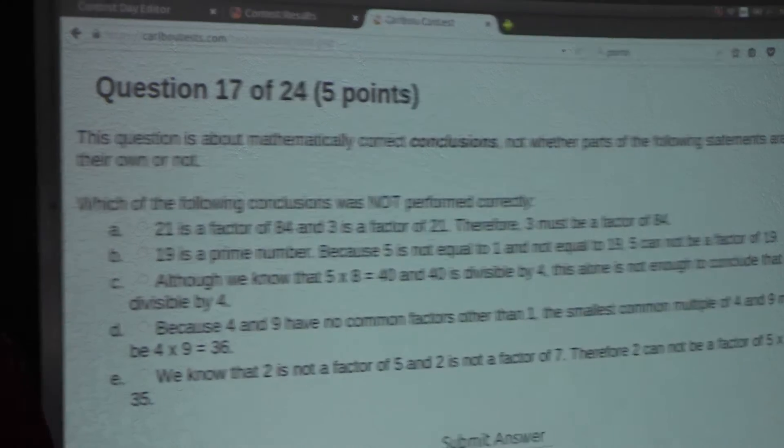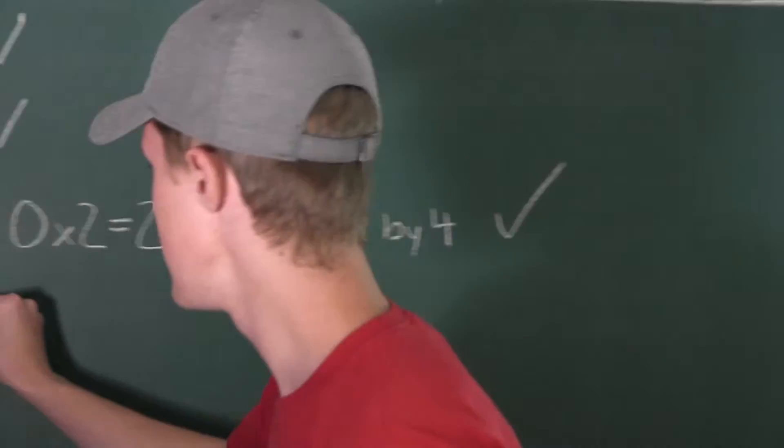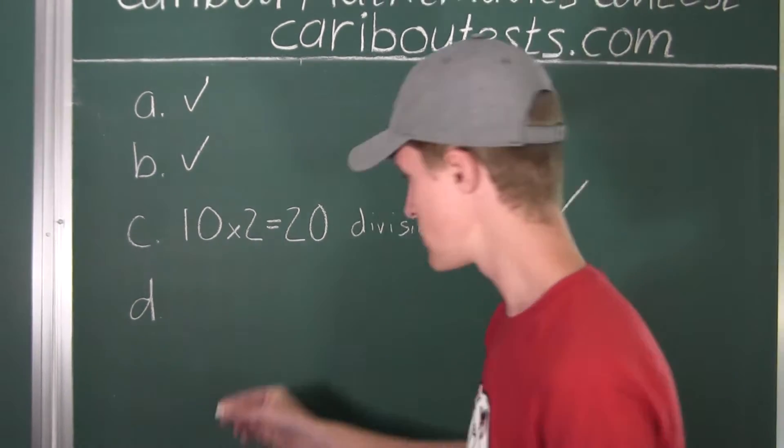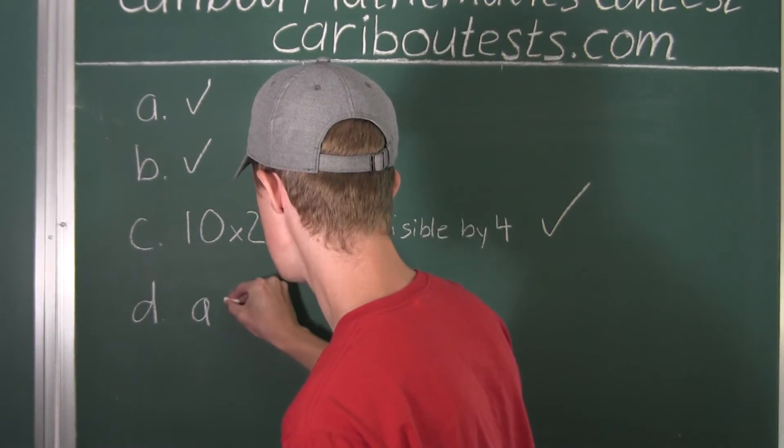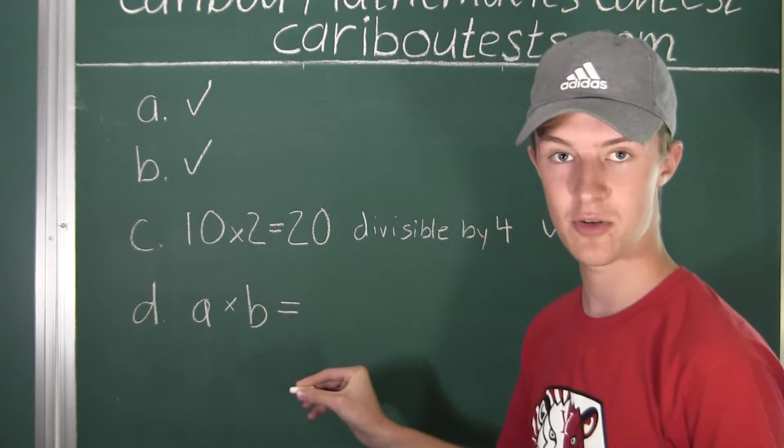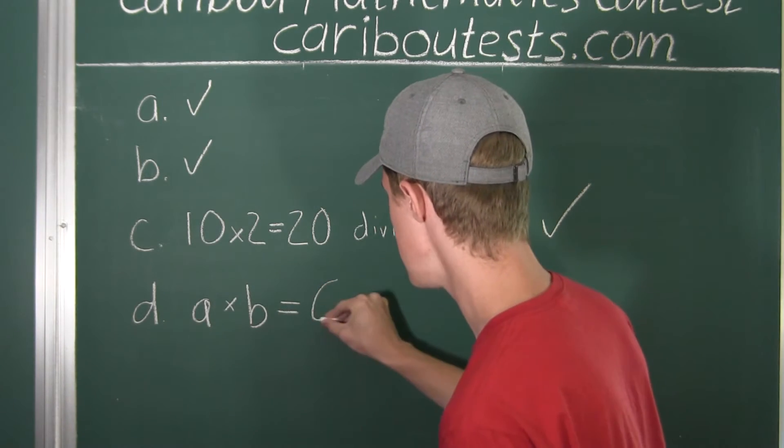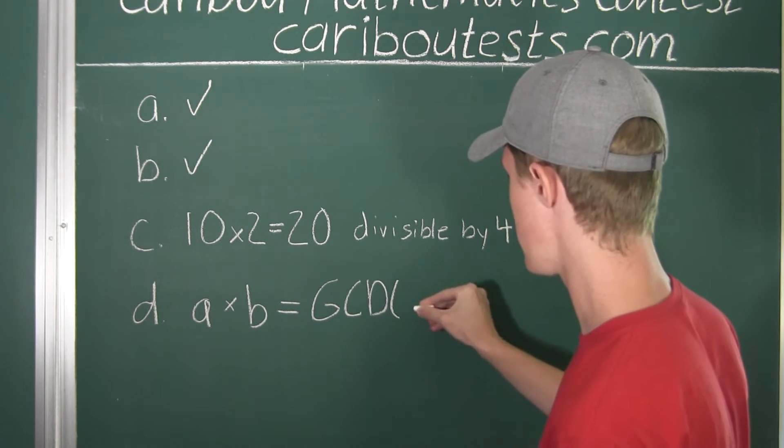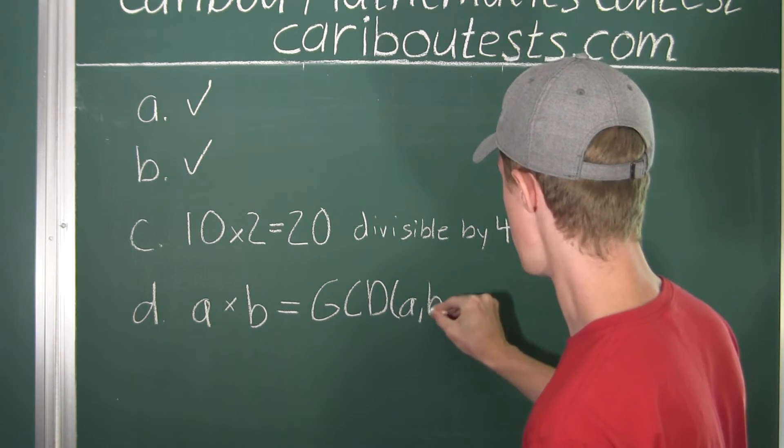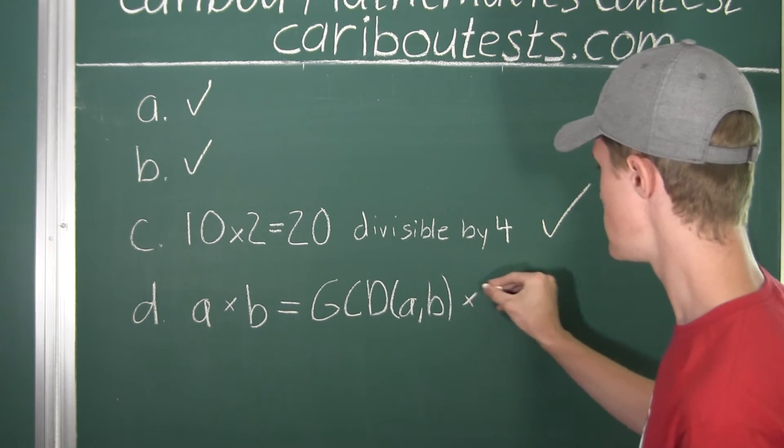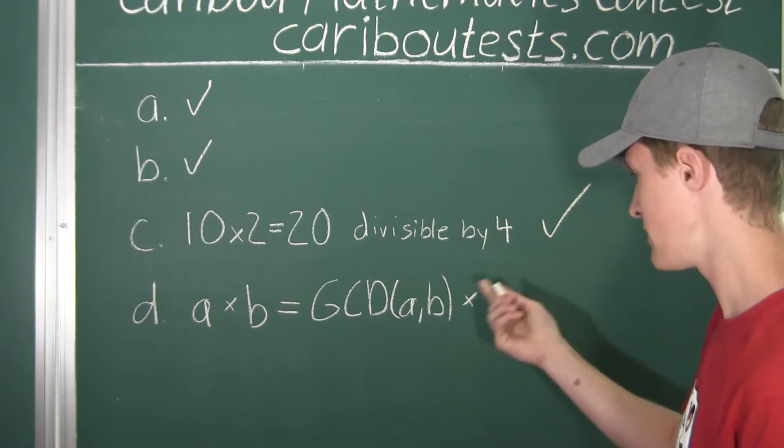Now, more generally, we will write that for any positive integers A and B, their product, so A times B, their product is equal to the product of their greatest common divisor, which in our example, our case, was 1, which is multiplied then to the lowest common multiple of, again, A and B.